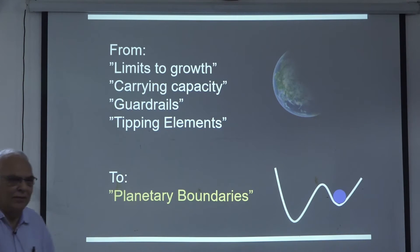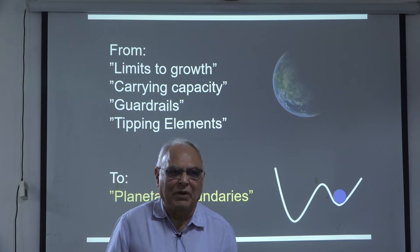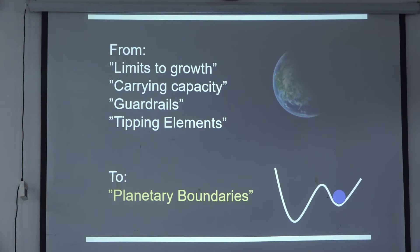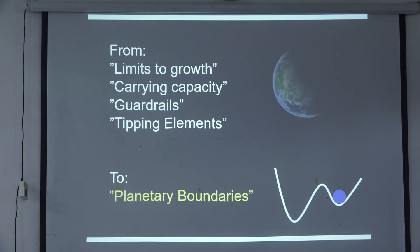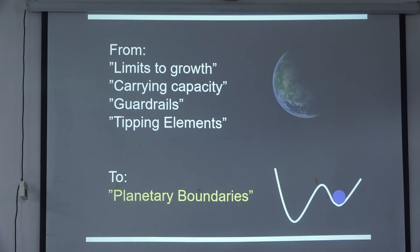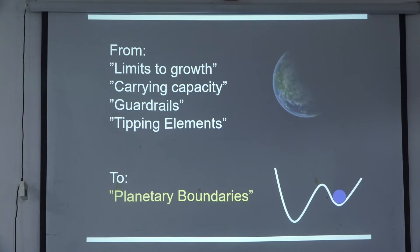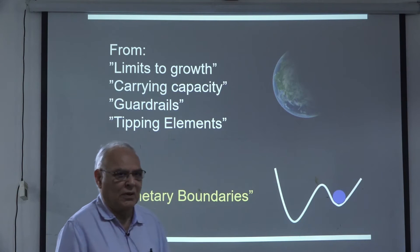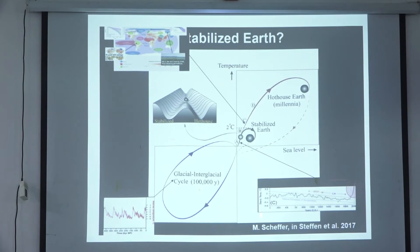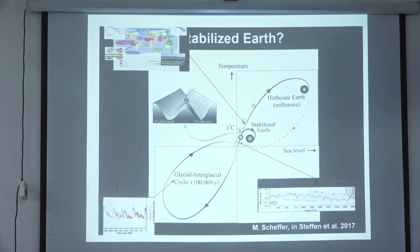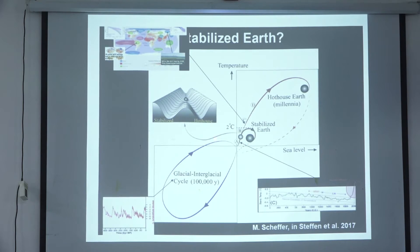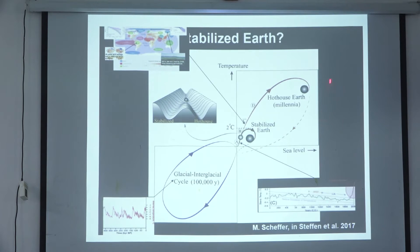We are there — 7 to 7.5 billion people. The debate starts: everybody is worried, whether in literature, economics, everywhere. From limits to growth, carrying capacity, guardrails, tipping elements — to planetary boundaries: what is the safe operating space for humans? Scheffer in 2017 shows the glacial-interglacial climate limit cycles — the Earth has moved out of that range and is sitting at the edge. It can have a trajectory going on to the hothouse Earth with no comeback. Are we headed there? We said 2°C, 450 ppm CO₂ — but we are already at 410 to 420 ppm.